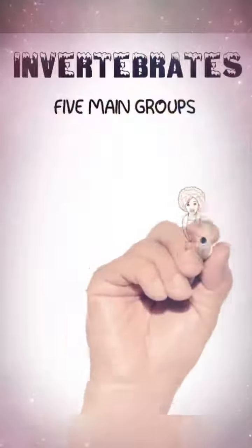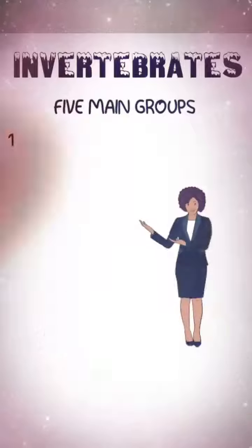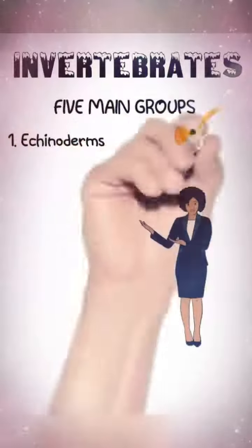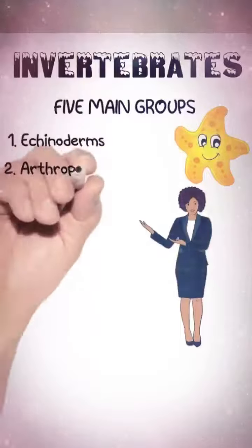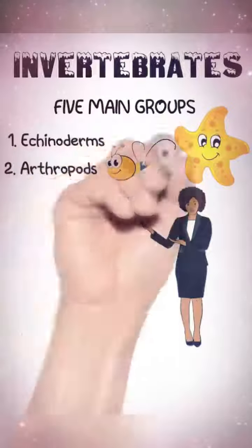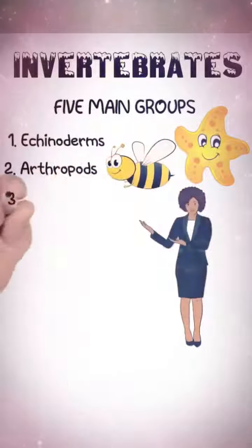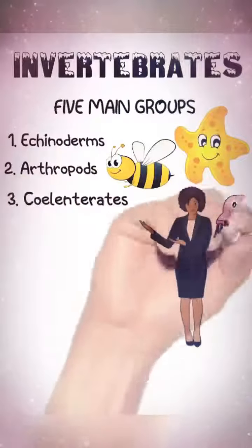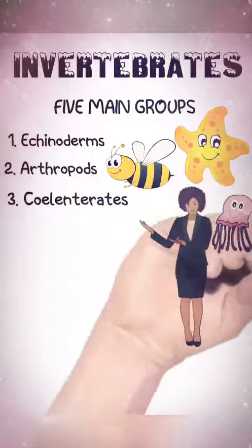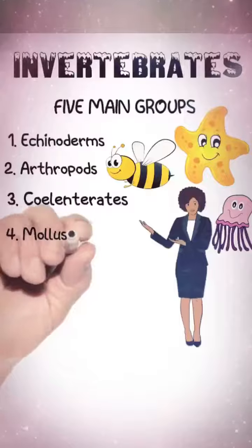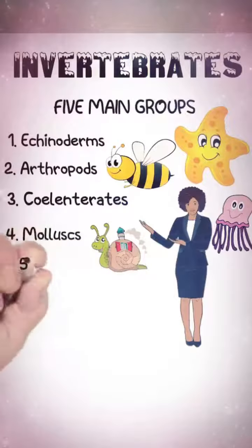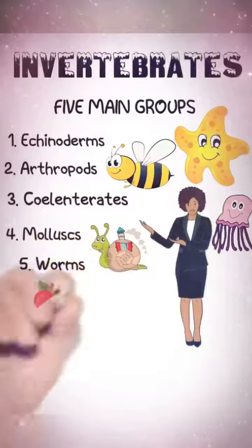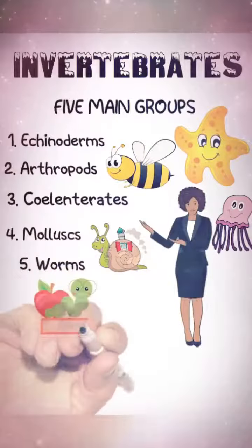Invertebrates, like vertebrates, are broken into five main groups. The first group is echinoderms — that includes starfish. Then there are arthropods, which include insects, spiders, and crustaceans. Coelenterates include coral, jellyfish, and anemones. Mollusks are snails, slugs, clams, and octopus. The last group is worms.